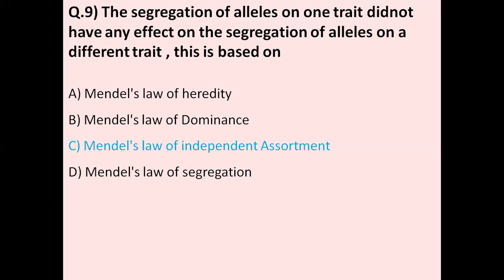Question number nine: The segregation of alleles on one trait did not have any effect on the segregation of alleles on a different trait. This is based on — option A Mendel's law of heredity, option B Mendel's law of dominance, option C Mendel's law of independent assortment, option D Mendel's law of segregation. The correct answer is C, Mendel's law of independent assortment.